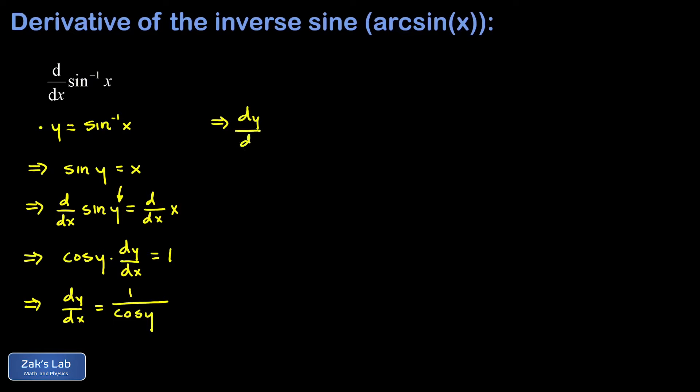I end up with dy/dx equals 1 over the cosine of the angle whose sine is x. Now, anytime you have a trig function of an inverse trig function, you can simplify it into an algebraic expression.